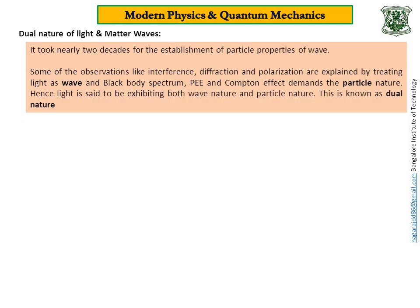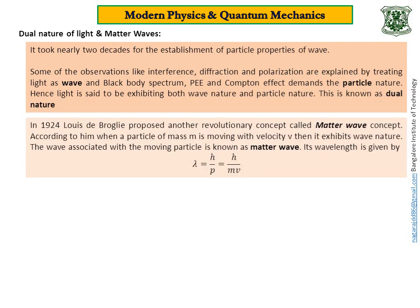Dear students, nature loves symmetry. Many things are symmetrical in nature. For example, if mass can be converted into energy, then energy can be converted into mass. Similarly, if electric field can produce magnetic field, magnetic field must produce electric field. On the same lines, if you think, if a wave can exhibit particle nature, why not the other way? This idea came to the mind of Louis de Broglie.